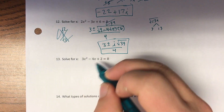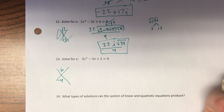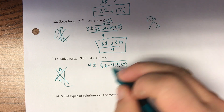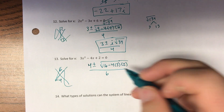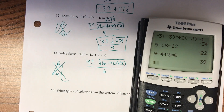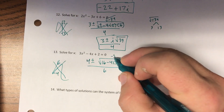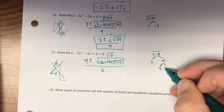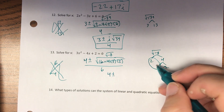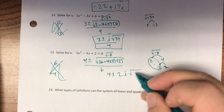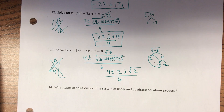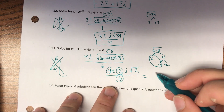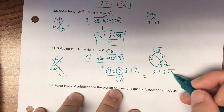Number thirteen — what multiplies to 6 and adds to negative 4? 3 and 2 doesn't work; 6 and 1 doesn't work. So quadratic formula: (4 ± √(16 − 4·3·2)) / 6 = (4 ± √(−8)) / 6. For √(−8): pull out the i, factor 8 as 2 × 2 × 2 — there's a pair of 2s that come out. That gives (4 ± 2i√2) / 6. Dividing everything by 2: (2 ± i√2) / 3.